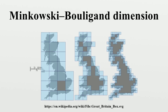The box-counting dimension is one of a number of definitions for dimension that can be applied to fractals. For many well-behaved fractals all these dimensions are equal; in particular, these dimensions coincide whenever the fractal satisfies the open set condition. For example, the Hausdorff dimension, lower box dimension, and upper box dimension of the Cantor set are all equal to log 2 / log 3.